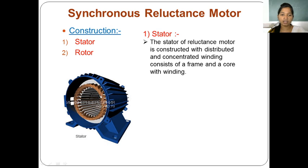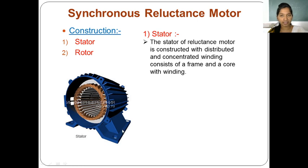The outer part, shown in blue in the diagram, is called the yoke. The main function of the yoke is to provide mechanical strength to the machine and protect its internal construction. Inside, the stator core has stator windings of concentrated or distributed type placed in the stator slots.